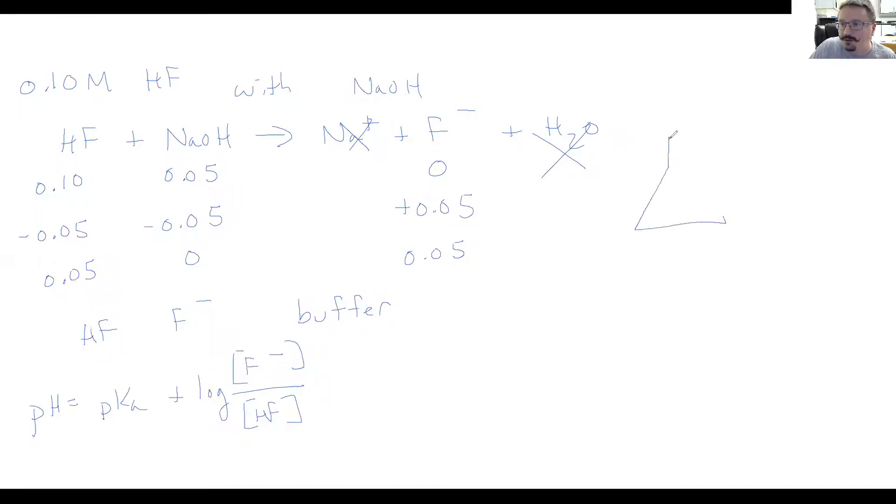Before you start the titration, if we have our Erlenmeyer flask, and we haven't added any base, then all we have is that weak acid, and we would need to know the Ka of that weak acid, and we can figure out what the pH is before we start.